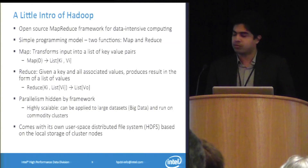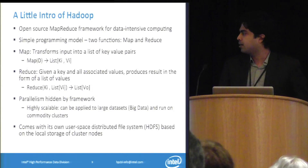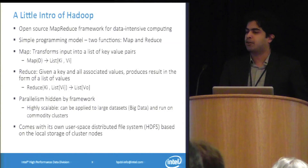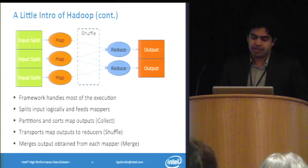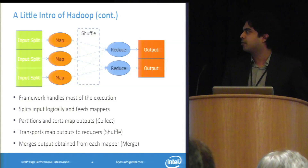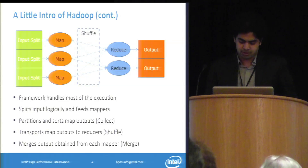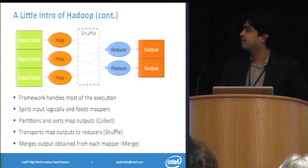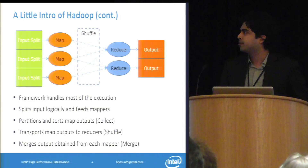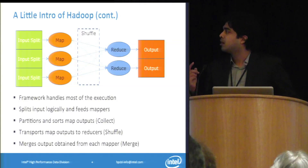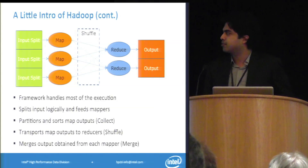Hadoop comes with its own user-space file system called the Hadoop Distributed File System. It's essentially a layer on top of the local disks of each node. One of the advantages of Hadoop is that most companies run it on commodity clusters — really low-cost, low-end hardware. This is the basic execution of a typical MapReduce program. The framework splits the inputs logically and feeds each mapper. The mappers process the data, and then the framework shuffles it. In the shuffle phase, the output of each mapper is sent to the input of each reducer, and finally the reducers give you the output.